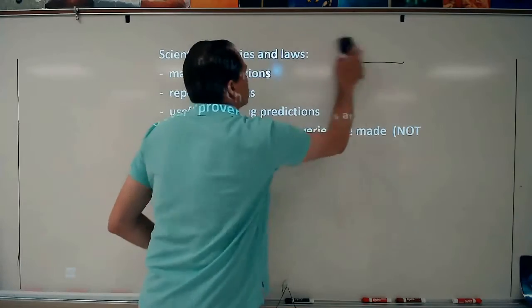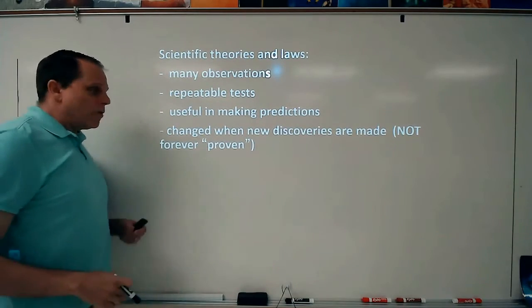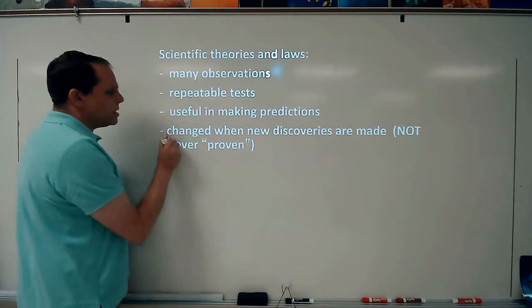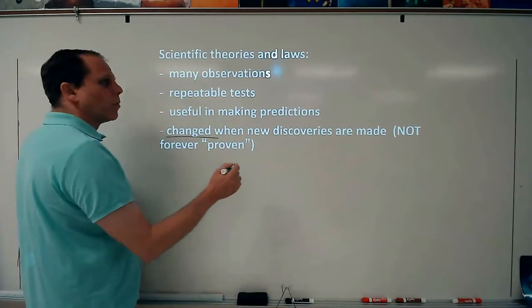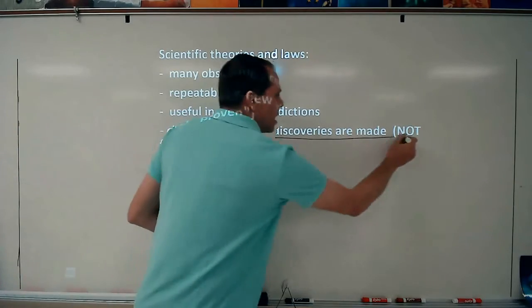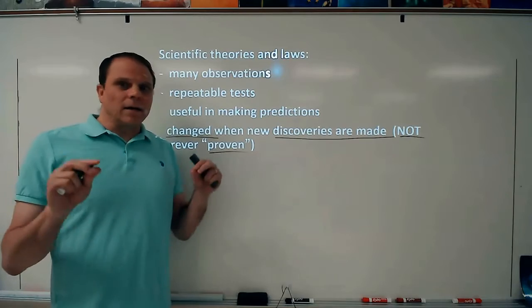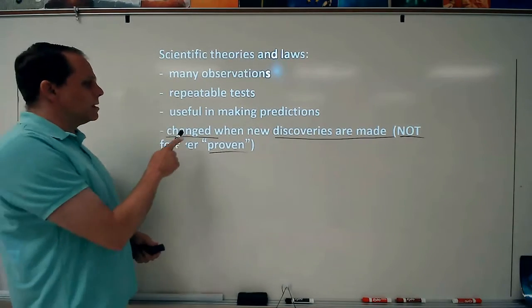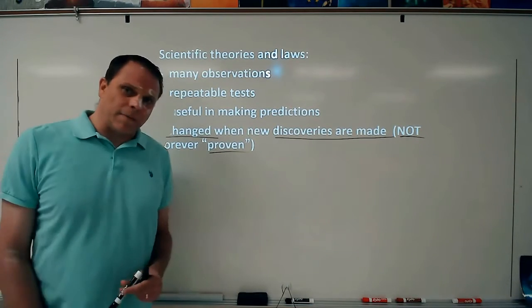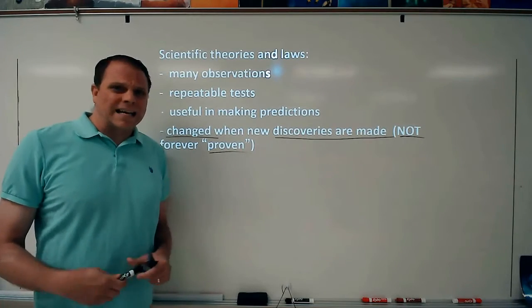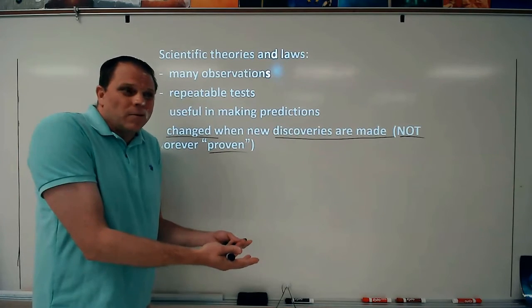All right. So both of them, theories and laws, lots of observations, repeatable tests can help us make predictions. Remember, it's important to understand that these things can change. These are going to be changed. What? It can change a law. Yeah. When we discover something new, maybe we didn't understand everything about it before. If we discover something new, we might have to change. Remember that laws are not proven forever. There's nothing that's proven forever. We might find some new information at some point that helps understand a degree of depth that we didn't have before. And so just keep in mind that these things are going to be changed. And it's not wrong for a theory to change. It's not wrong for a law to change. It doesn't mean that everything we knew about it was wrong. It just means we might not have had enough detail. And so we modify theories and modify laws. That's a part of science.